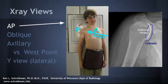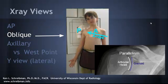The AP view is taken directly 90 degrees to the patient, and you can see that the glenohumeral joint is at a slight angle. That's in comparison to the oblique view, in which you get a very parallel, direct view of the glenohumeral joint. Most dislocations you can probably see on an AP or oblique view.